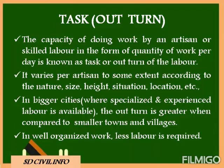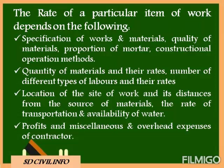In order to calculate the cost of labor, we have to know what is meant by task or outturn. The capacity of doing work by an artisan or skilled labor in the form of quantity of work per day is known as task or outturn of the labor. The outturn of work varies per artisan to some extent according to the nature, size, height, situation, and location. In bigger cities where specialized and experienced laborers are available, the outturn is greater compared to smaller towns and villages. In well-organized work, fewer laborers are required.